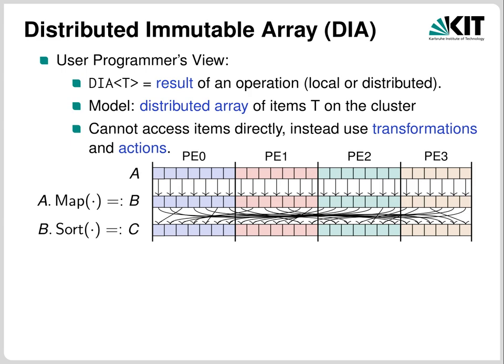The framework intentionally hides how the array is distributed, but one can imagine it divided equally onto the processors in order. The array can contain C++ objects of basically any type — characters, integers, vectors of integers, structs and classes — as long as they are serializable. But you cannot access items directly. Instead, you apply transformations to the entire array as a whole — for example a map transformation which can modify each item, or sorting the array with some comparison function. Each time, the result is a new DIA.